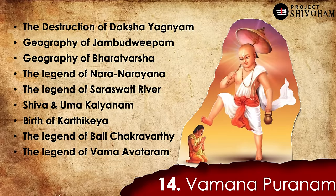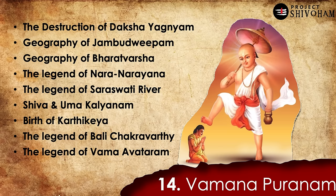Number 14, Vamana Puranam: it talks about the destruction of Daksha Yajnam — a very important event that led to the emergence of the 18 Shaktipitas, the shift of Agasthya Maharshi to south of the Vindhyas thus establishing Tamil culture and language, and many other important events. It also covers the geography of Jambudvipam and Bharatavarsham, the legend of Naranarayana in Badrinath, the legend of Saraswati river, Shiva and Uma Kalyanam, birth of Karthikeya, and the legend of Balichakravarti — the foundational text for Onam celebrated in Kerala. And as the name suggests, it explains the legend of Vamanavataram.